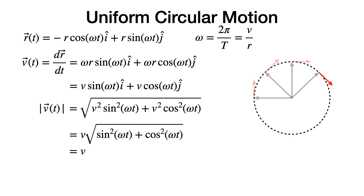Looking at the magnitude of the velocity — the square root of the sum of squares of components — the v² factors out, and inside the radical we have sine²(ωt) plus cosine²(ωt), which equals 1. So the magnitude of the velocity is a constant v. This confirms uniform circular motion: the velocity direction changes but the speed remains constant.